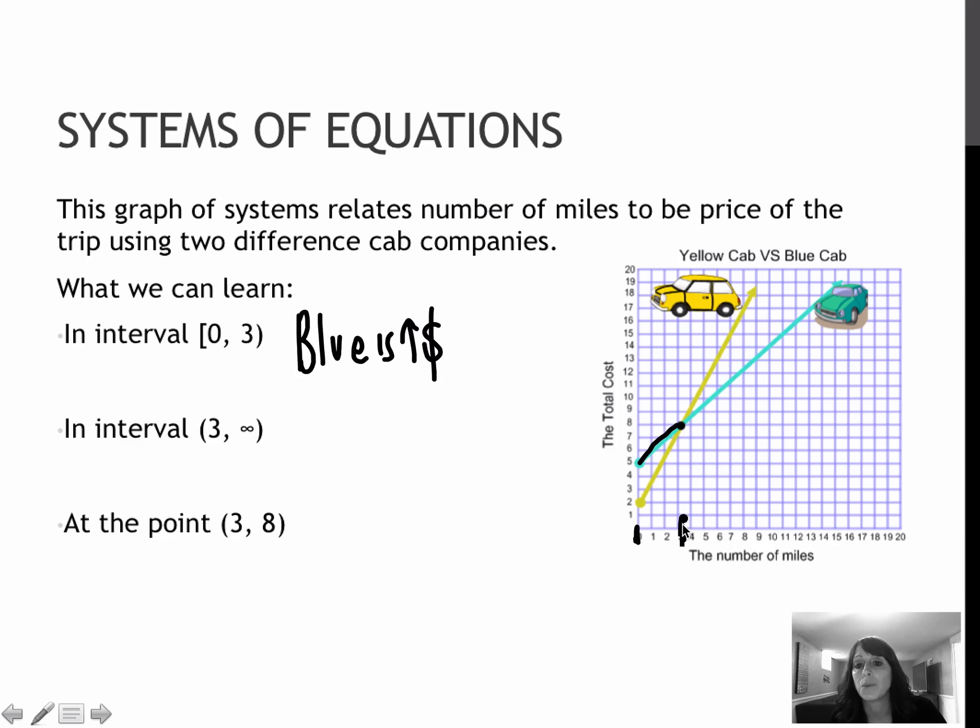In the interval from three on to infinity, meaning forever, once we hit three, it's very clear that the yellow is more expensive or the blue would be cheaper. And obviously we're trying to save money. So if I only had to go two miles, I would probably choose the yellow company because that is cheaper. If I had to go more than three miles, I would go with the blue company because it's cheaper.